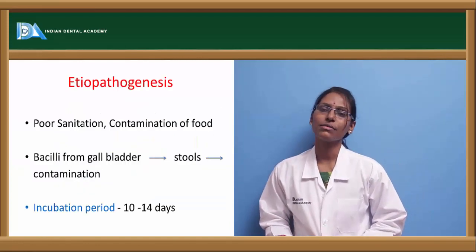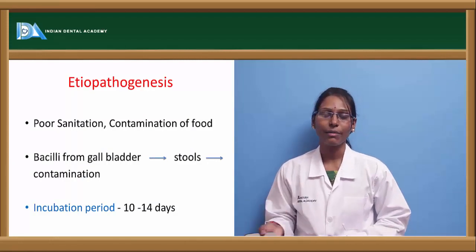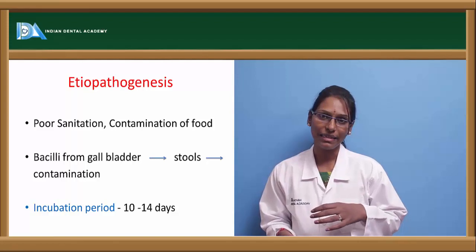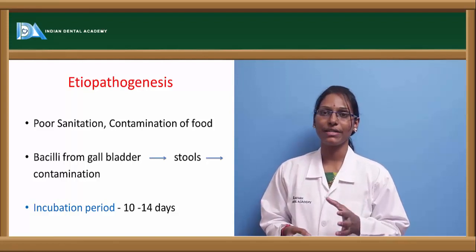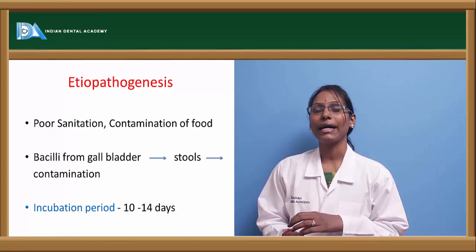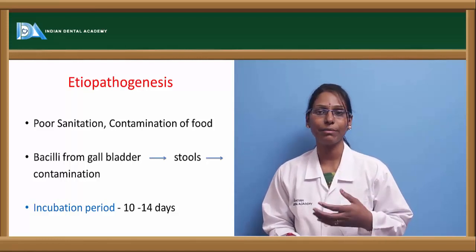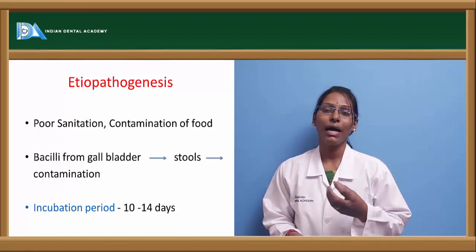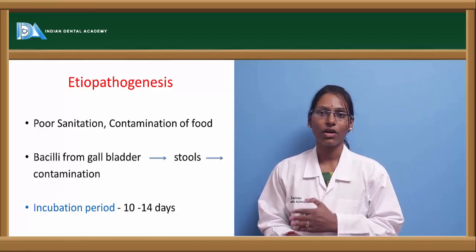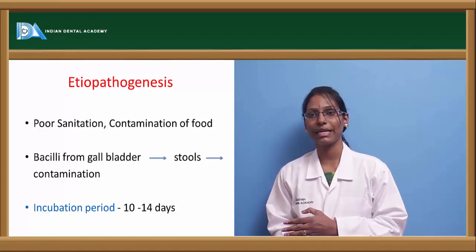Coming to pathogenesis, the bacilli entering through contaminated food and water will enter the small intestine. Especially at the ileal tract at the Peyer's patches, the bacilli attack the lymphoid aggregates. There they multiply, causing swelling of the Peyer's patches, which in turn causes ulcerations and also perforations in complicated cases.